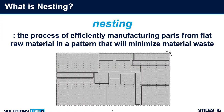We all understand the concept of nesting. We take a series of panel designs and design shapes, and we put them into a full sheet of material to hopefully produce the most efficient nest, driving down the amount of waste material coming off of the machine. Rectangles are easy, but once you start bringing in arcs and circles, we start generating a little bit more wasted material within the nest — that's just the geometry of the parts.